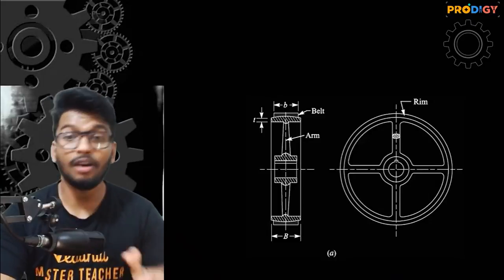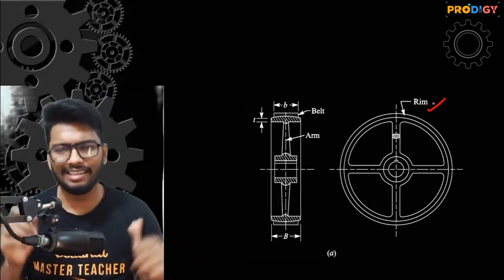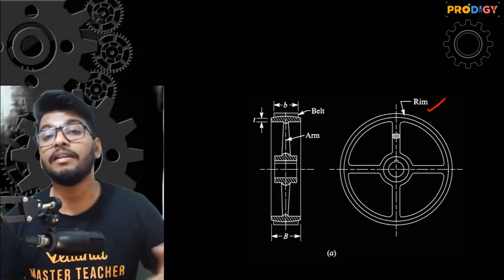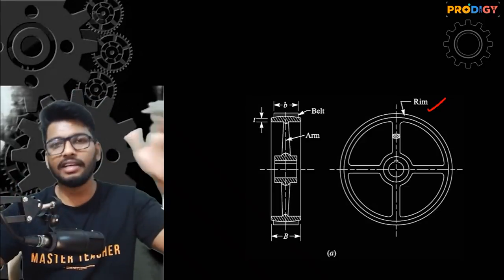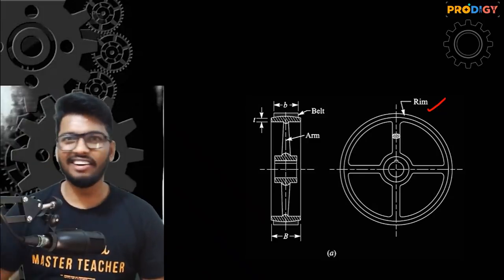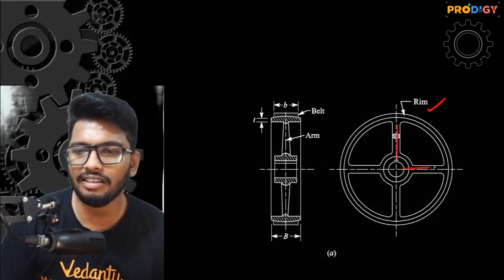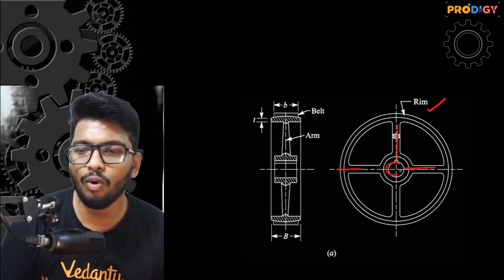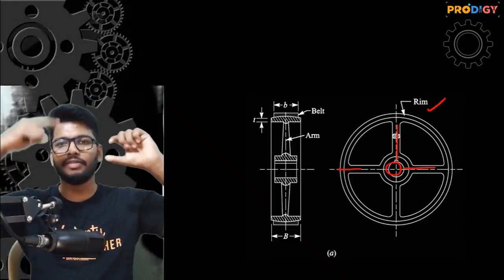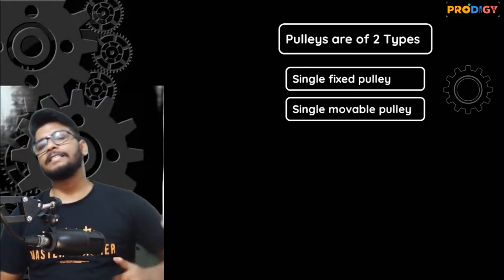There are two types of pulleys. The rim is generally made of metal — strong metal like steel or iron, which is considered the gold standard. These parts you see are the arms, and this is the hole through which the axle passes. The axle is fixed and the wheel is free to rotate about that particular axis.